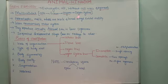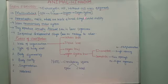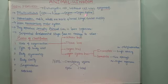Examples of organ systems include the respiratory system, digestive system, circulatory system, nervous system, and so on. Thus organ systems are found in the human body or animal body, and together all organ systems form an individual organism.